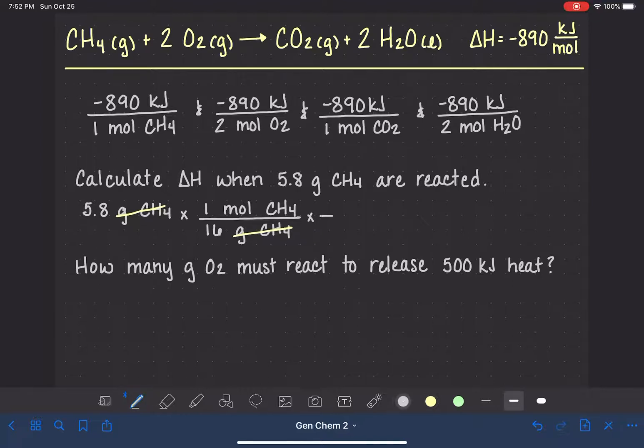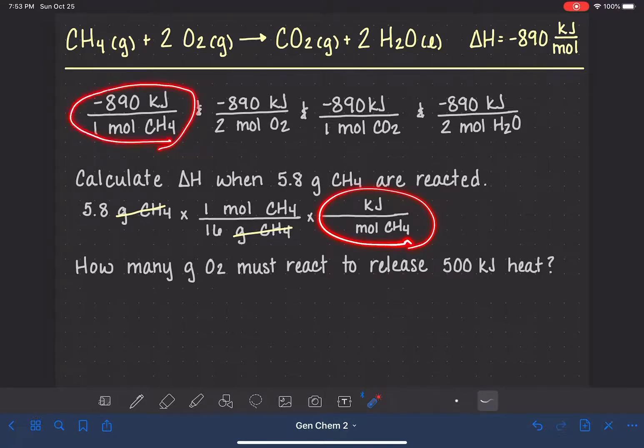And then once we get into units of moles, we want to multiply by a conversion factor that will allow us to cancel out the units of CH4, moles of CH4, and convert into joules, in units of kilojoules. To do this, we're looking for the relationship between kilojoules and CH4. We can see from this equality that we have negative 890 kilojoules for every one mole of CH4. When we do the math on this, we will end up with a value of negative 320. The units this time are going to be just kilojoules. We don't have kilojoules per mole anymore because we've canceled that unit out.